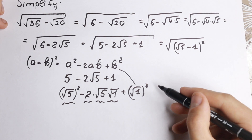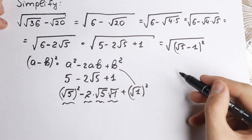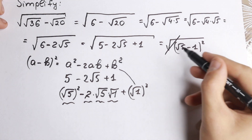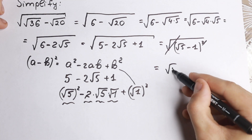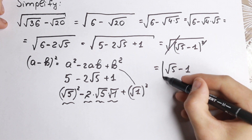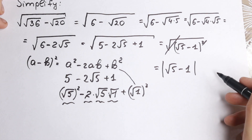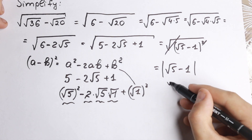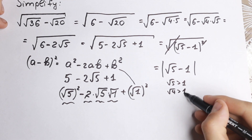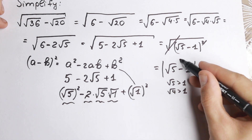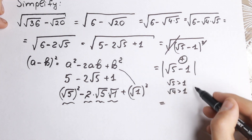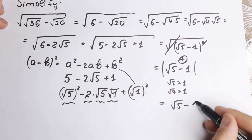I hope you understand this tricky step. So we have square root of (square root of 5 minus 1) squared. We can cancel the square root and the square. Many students make a mistake here — we need to write absolute value, because we don't know the sign. But since square root of 5 is greater than 1, the expression is positive, so we can drop the absolute value.